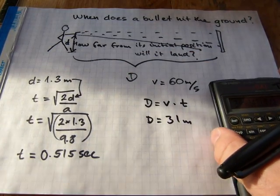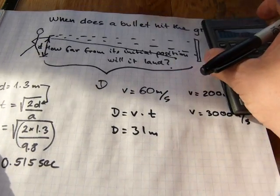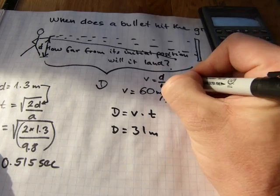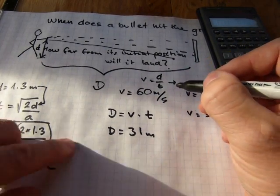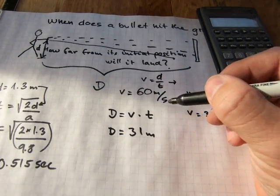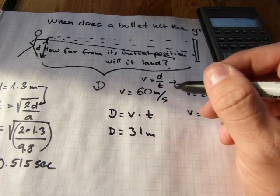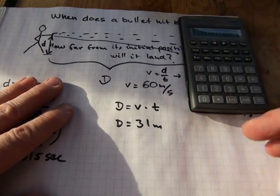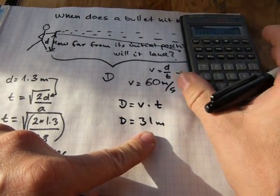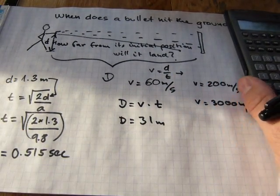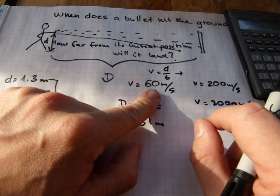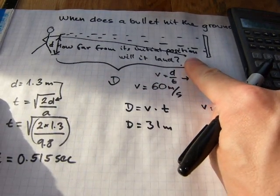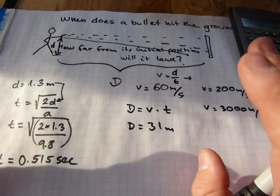And this equation is coming from speed equals distance over time. Therefore, distance equals speed multiplied by time. So this is just grade 8 algebra or so, grade 9, I don't know. So if the bullet is traveling at 60 meters per second, it will hit the ground at exactly 31 meters from you.